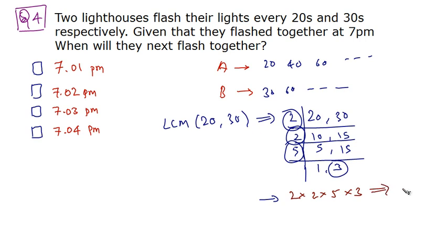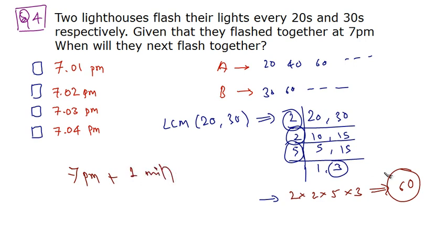The LCM of 20 and 30 is 2 × 2 × 5 × 3 = 60. Since 60 seconds is one minute, and the lighthouses flashed together at 7 PM, they will flash together again one minute later — at 7:01 PM.